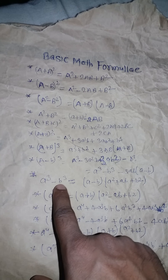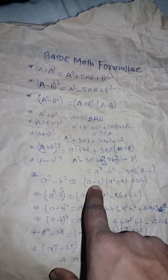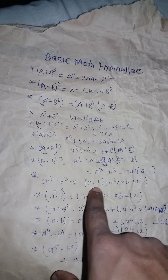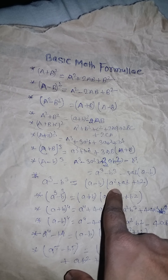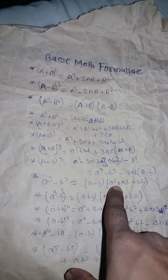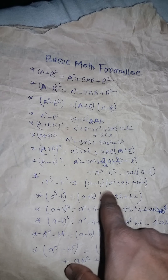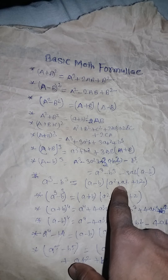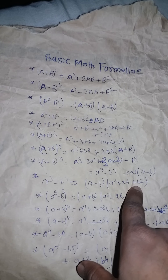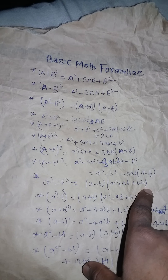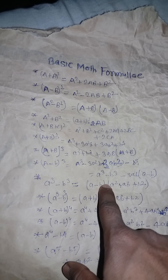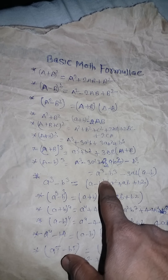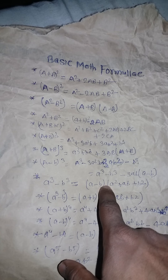A cube minus b cube is equal to a minus b into a square plus ab plus b square. Here, "into" means hidden multiply.